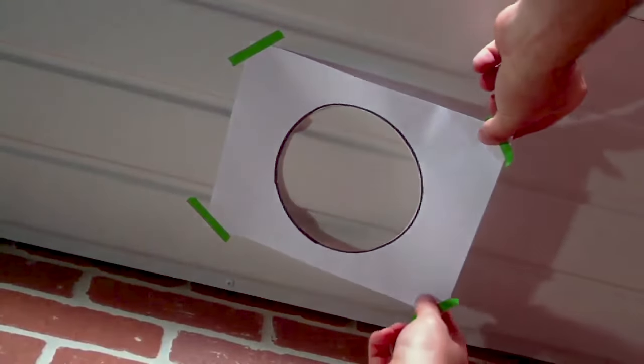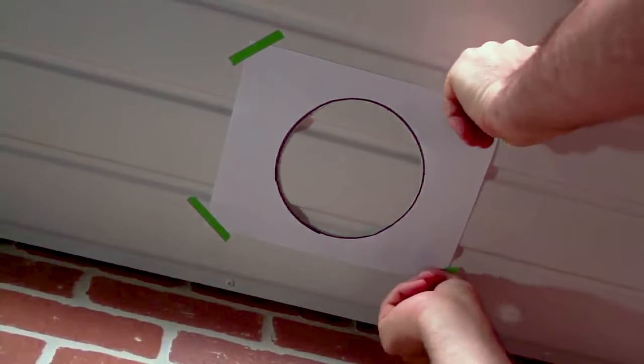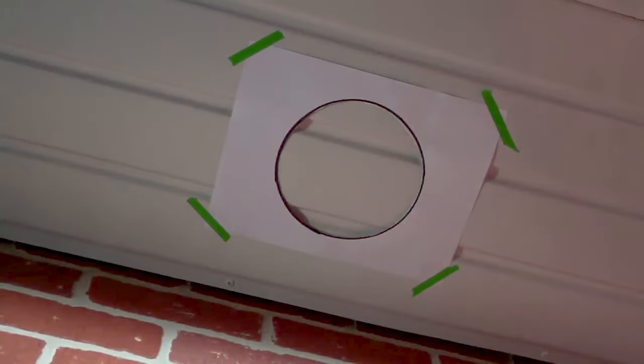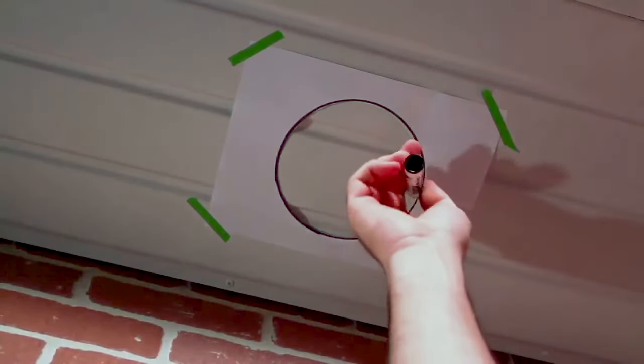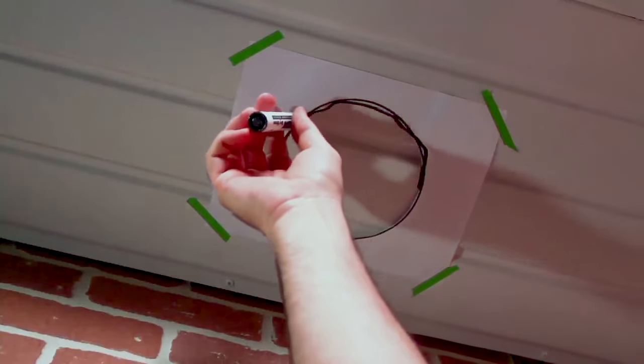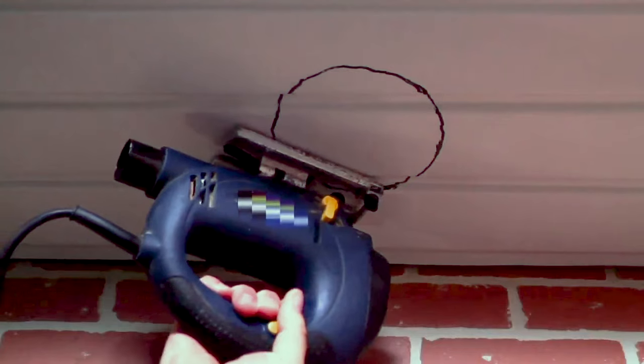Your soffit vent comes with a set of instructions onto which there is a circular template drawn. Cut out the circle template and position it in the midpoint of the soffit. Trace the circle onto the soffit and cut the hole using either a jigsaw or tin snips.